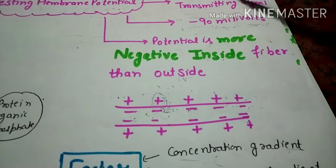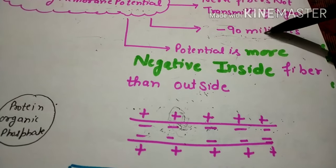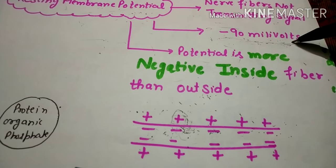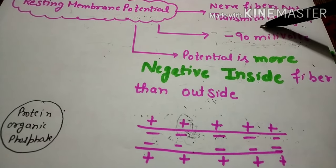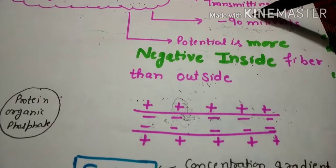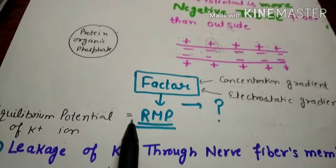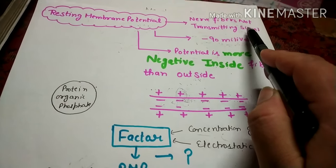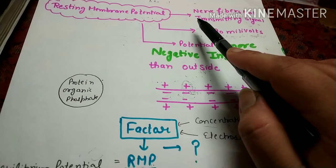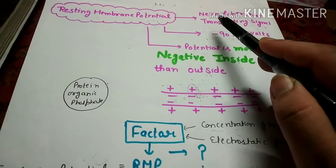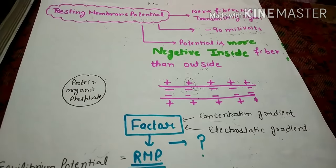So these are the factors responsible for the greater negativity inside the fiber than outside, and the factors which contribute to this minus 90 millivolts. Nerve fibers are not transmitting signals at this time because the ions have their equilibrium potential maintained, which is why the membrane does not transmit nerve signals. This is the resting membrane potential. Action potential will be discussed in the second video.